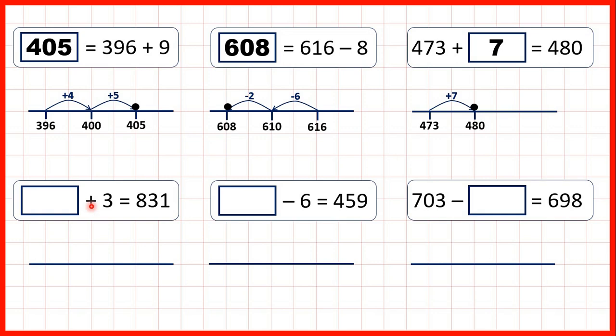Something plus 3 equals 831. Remember, if we have a missing number in an addition problem, we can use subtraction to find our missing number, to find the number that we started with. So we can work out 831 minus 3. We can subtract 1 to get to 830, and then subtract another 2. So that means 828 plus 3 is 831.